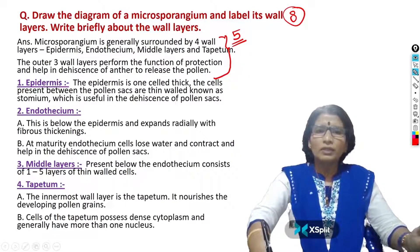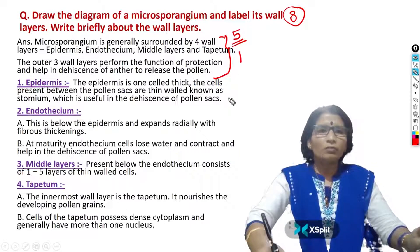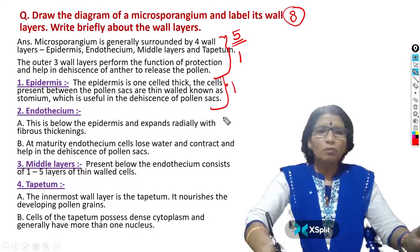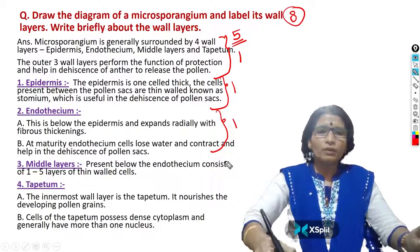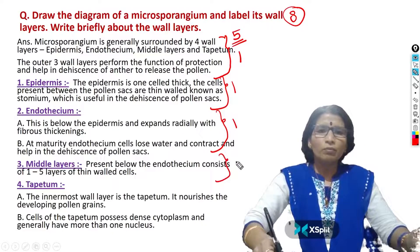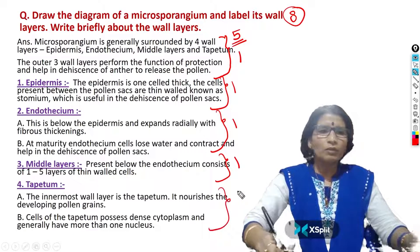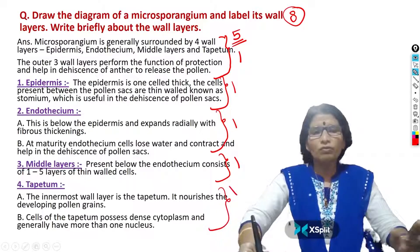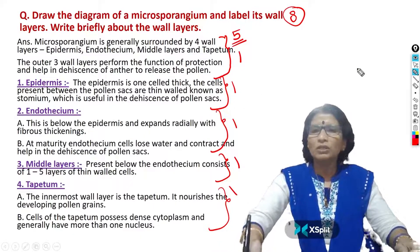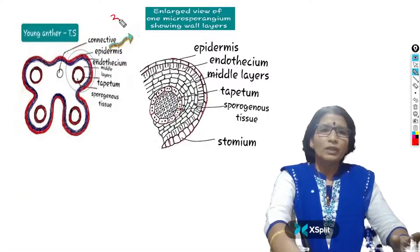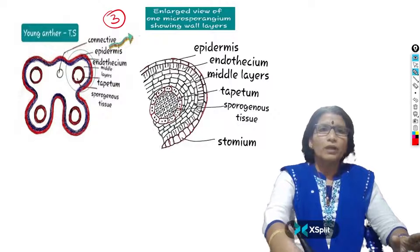If you write this part — just the names of the wall layers — you will get 1 mark each. Write epidermis, you will get 1 mark. If you write endothecium, you will get 1 mark. If you write about the middle layers, you will get 1 mark. If you write about the tapetum, you will get 1 mark. So in this way, 5 marks you will get if you write the description to this question. For the diagram, you have 3 marks.